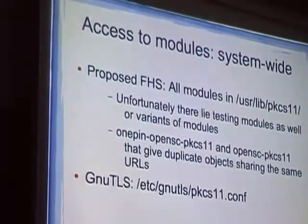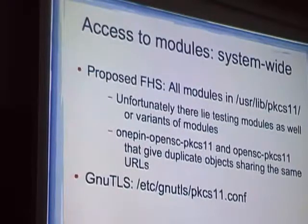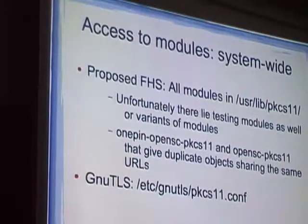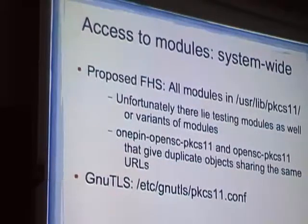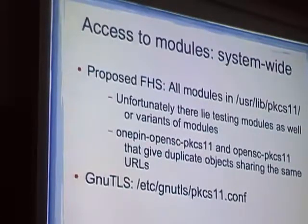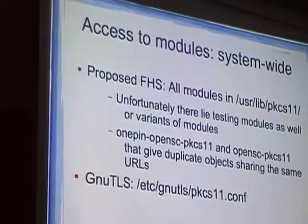There is a proposed filesystem standard that says: put all the modules in that directory, and then GnuTLS and OpenSSL will load them. But it has a problem — I found there are some testing modules that, as long as you use them in GnuTLS, you get errors on standard error saying this is a testing module. Also, I found that OpenSC has two libraries with the same PKCS11 identification, and when you list objects they give you the same objects sharing the same URLs. So it's impossible to use this directory and load all the libraries from it.